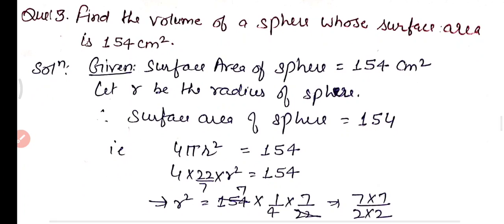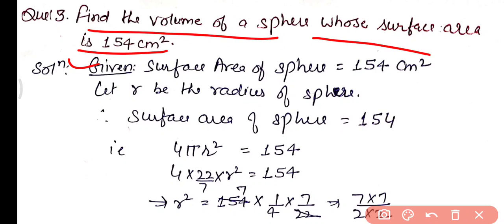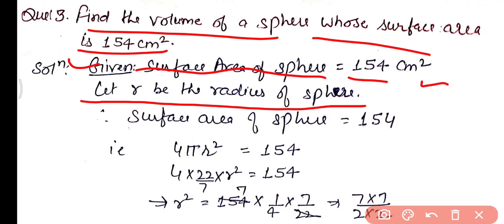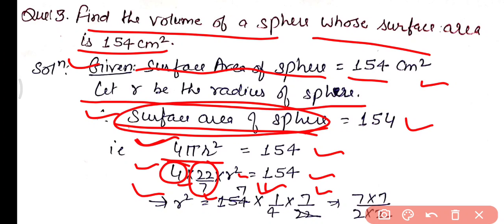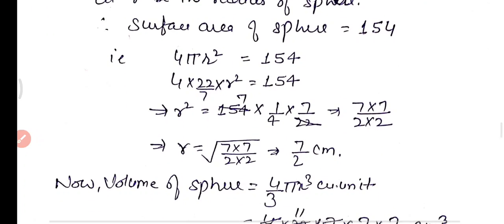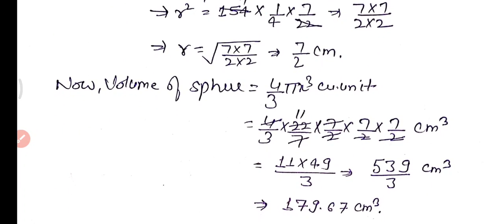Practice question 3: find the volume of a sphere whose surface area is 154 cm². First, we find the radius from the surface area. Surface area of sphere = 4πr² = 154 cm². So 4 × (22/7) × r² = 154. Transposing gives r² = 154 × (1/4) × (7/22) = 49/4. Taking the square root, r = 7/2 centimeters.